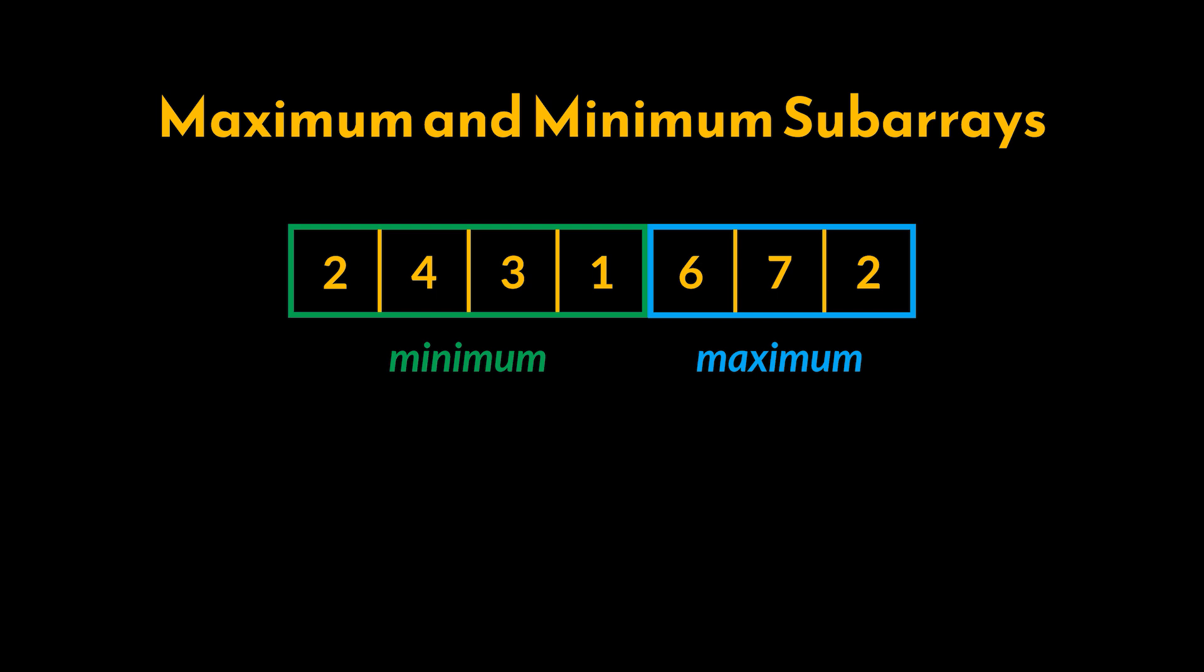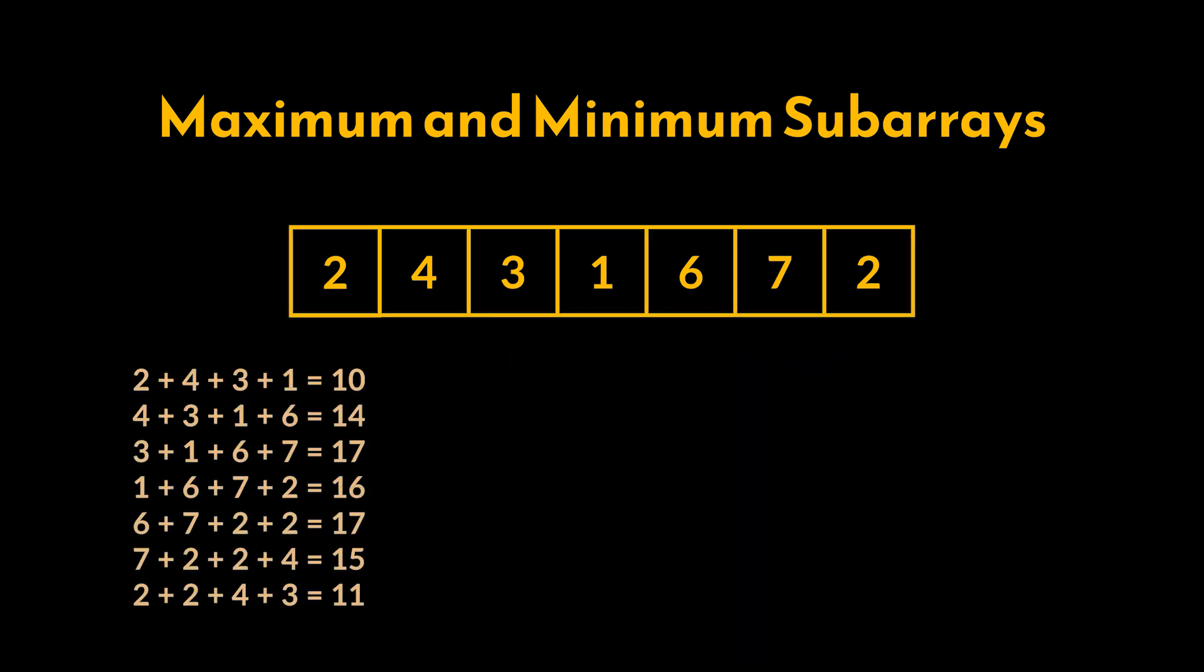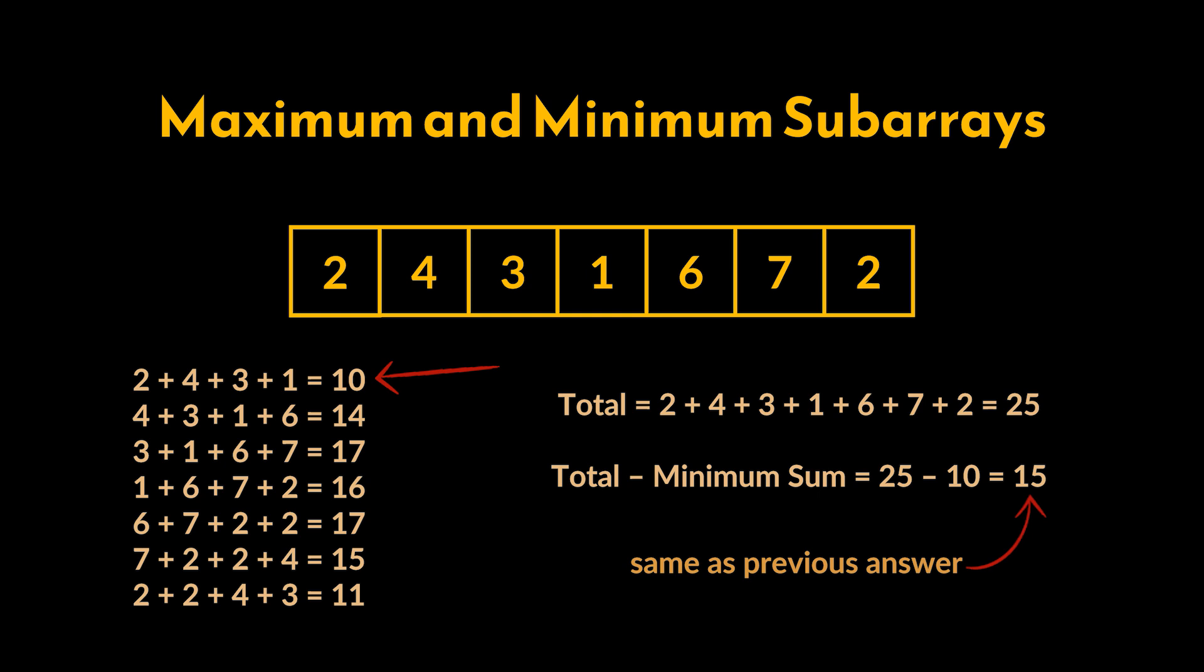Now minimizing subarrays is a classic problem. Suppose K equals 3 and the array has 7 elements. This means that the subarray we are trying to minimize has a size of 4, and all the possible subarrays of size 4 that can be formed out of this array are the ones you see in front of you. The minimum between these arrays is the first one, which is the one we expected. Now if we manage to calculate the sum of its elements and then subtract this minimum sum from the total sum of all the elements inside the array, we will obtain the sum of the remaining elements, or the sum of the maximum subarray of size K we are looking for.